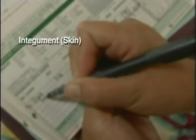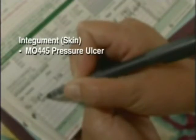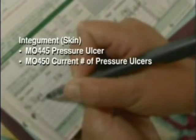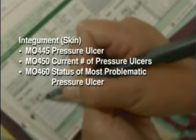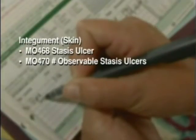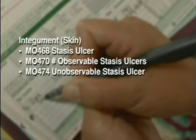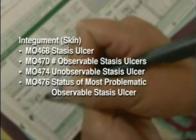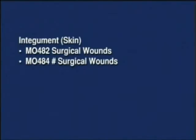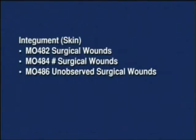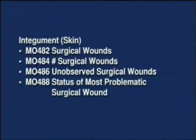Skin assessment also includes assessing for the presence of pressure ulcers. If present, the clinician must observe for and document the number and stages of observable pressure ulcers and the status of the most problematic pressure ulcer, documenting the degree of healing visible. Also document the presence of healed pressure ulcers, as this skin area is susceptible to breakdown. The clinician must also assess for the presence of a stasis ulcer, the number of observable stasis ulcers, and the status of the most problematic observed stasis ulcer. If the patient has a surgical wound, assessment and documentation should reflect the number of surgical wounds and the status of the most problematic surgical wound.